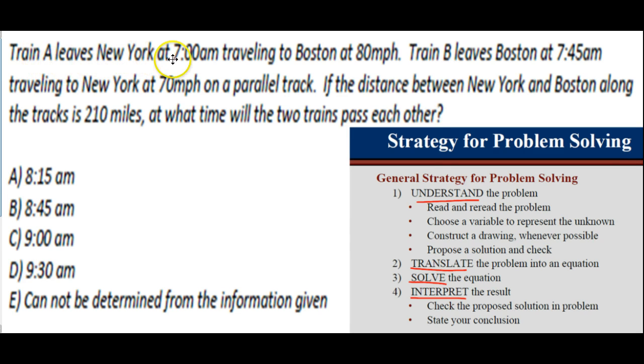Train A leaves New York at 7 a.m. traveling to Boston at 80 miles an hour. Train B leaves Boston at 7:45 a.m., so notice 45 minutes later, we're going to need that later, traveling to New York at 70 miles an hour on a parallel track.